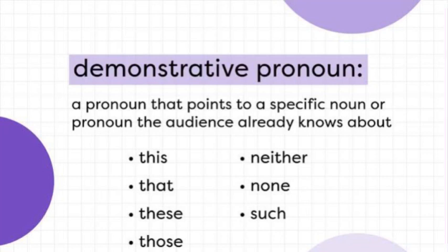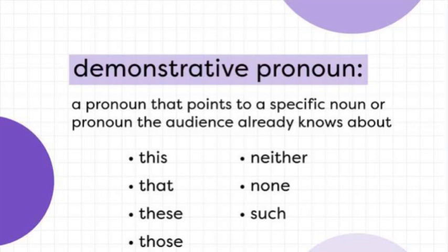'Neither' ہم تب بولتے ہیں جب دو یا زیادہ لوگ ہوں اور کہنا ہو 'neither of us believe in your idea'۔ 'None' ایسی جگہ آتا ہے جب کوئی ایک بھی نہ مانتا ہو — 'none of us believe in your idea'۔ 'Such' کا مطلب ہے 'اس طرح' یا 'جس طرح' — یہ بھی demonstrative pronoun ہے۔ مثال: 'I haven't seen such a good book'، 'He is such an honest man'۔ یہ سب specific noun کی طرف اشارہ کرنے کے لیے demonstrative pronouns کے طور پر استعمال ہوتے ہیں۔